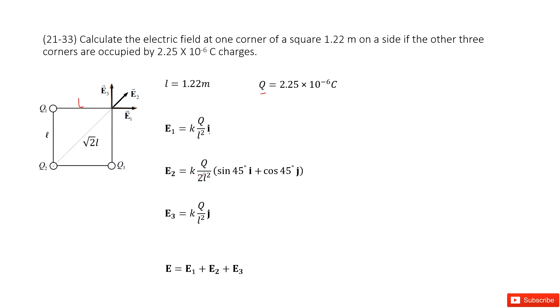So it becomes kQ/2L². Now we look at the direction. The direction is radially outward, so it moves outward at 45 degrees with the x-direction. We can project E2 in the x-component and y-component with sin 45° i and cos 45° j.